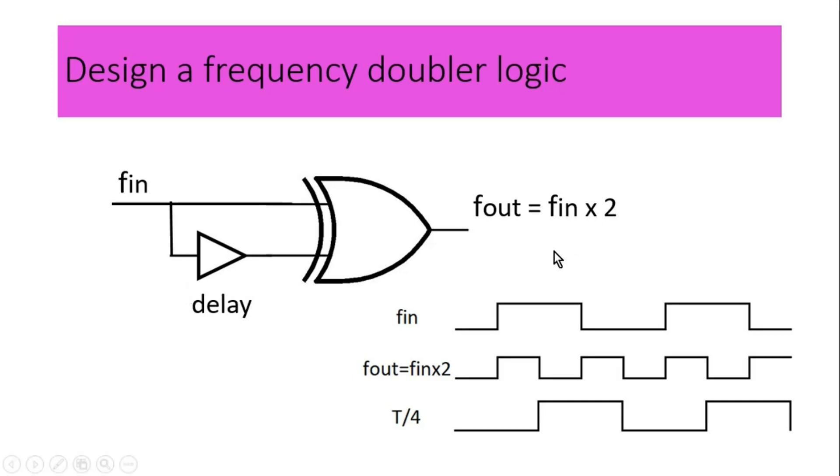Friends, the next very interesting topic is, if this delay cannot be controlled very precisely, in this example, we need it to be equal to T/4. And now let us assume that this delay is different from T/4. What will happen to our output signal f_out? This is very important to understand. The effect of this delay variation we will discuss in a separate video.